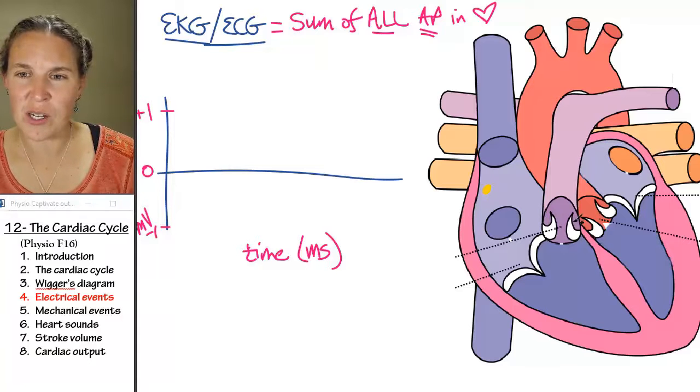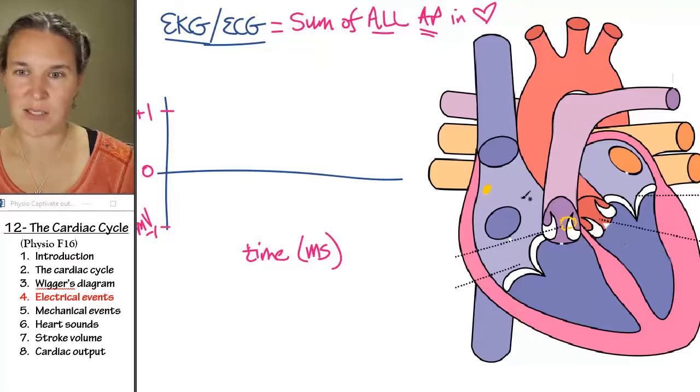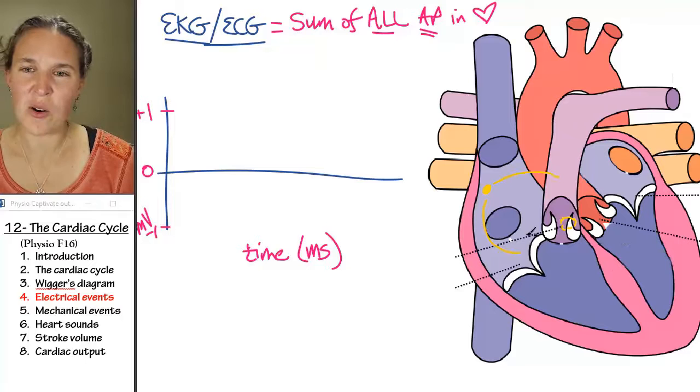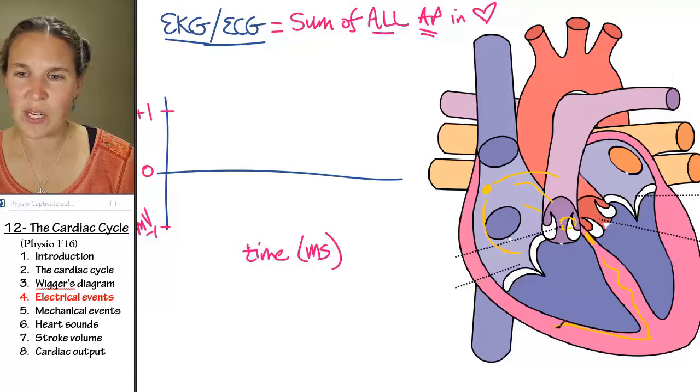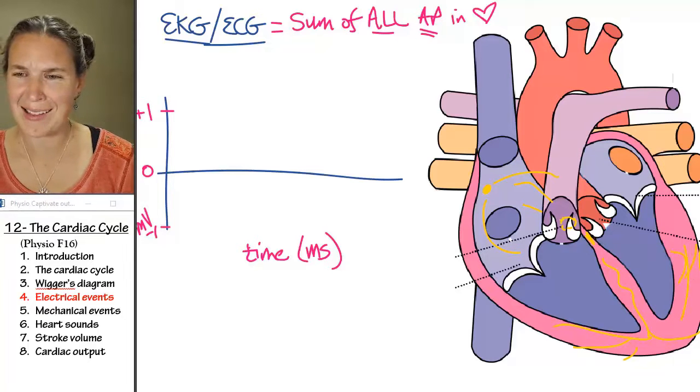We're going to have our SA node, our AV node, which I'm going to put, it's going to be back here, like buried back there, right behind that vessel. And we've got all our internodal pathways heading in. We've got our bundle branch. We've got all our Purkinje's. We've got crazy branching happening on here. Yeah, look at all that action.